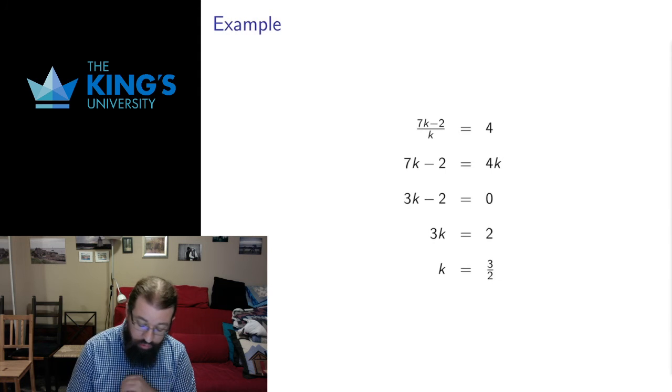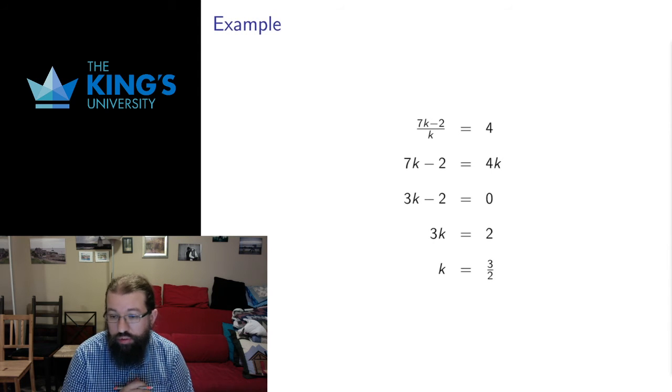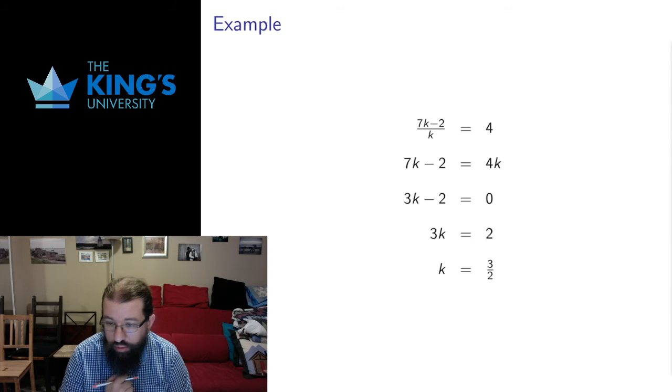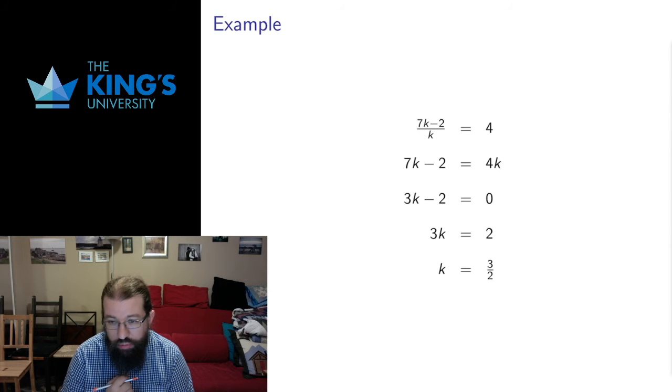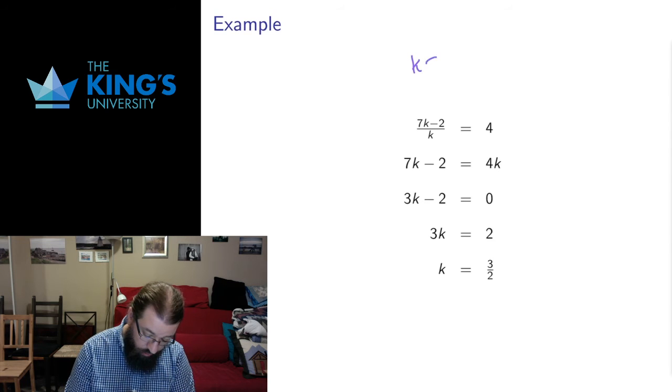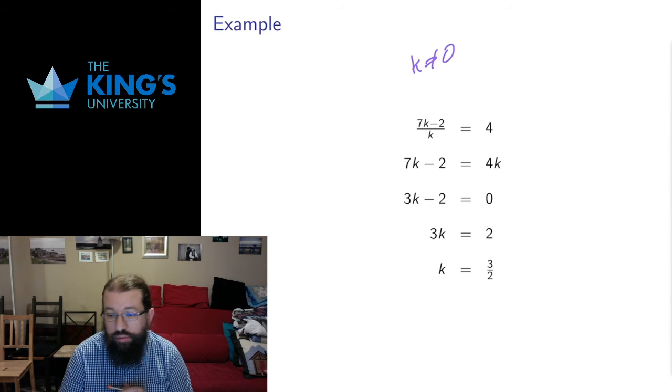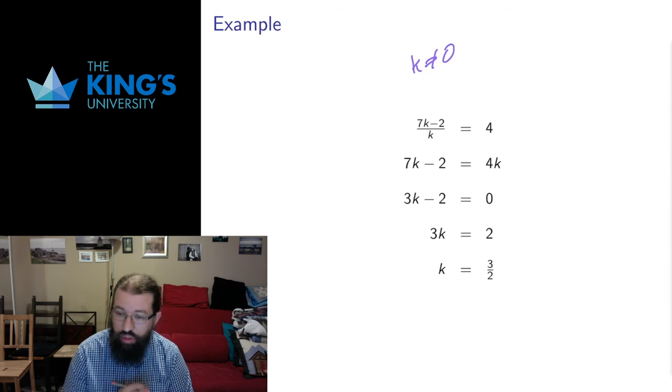I actually have another example. Let's do one more example before we finish. Here's an example where I have a k in the numerator and denominator. I have to be a bit careful here that k can't equal 0, or else this expression isn't defined. But that's fine. As long as k is not equal to 0, I can multiply both sides of the equation by k.